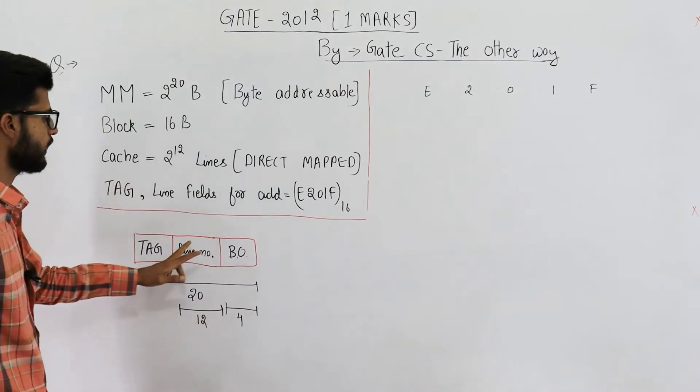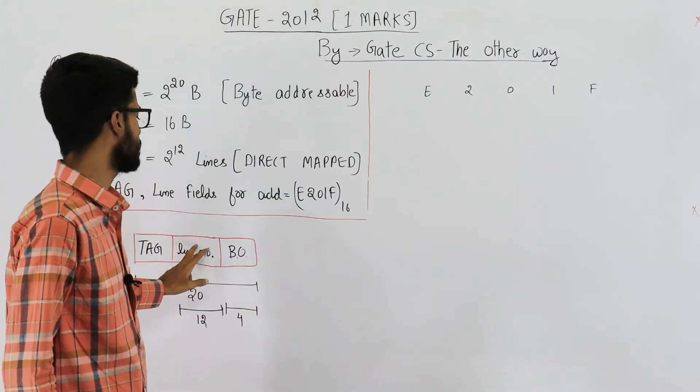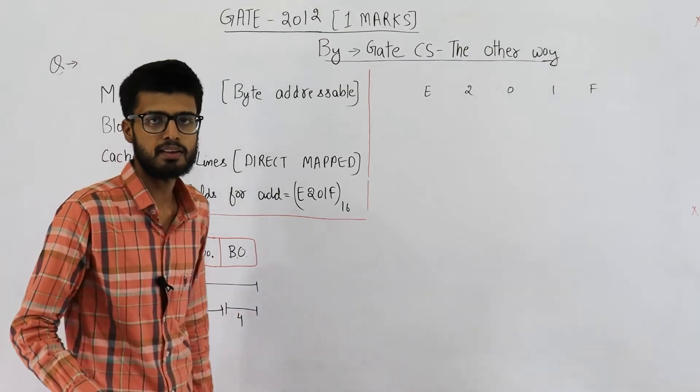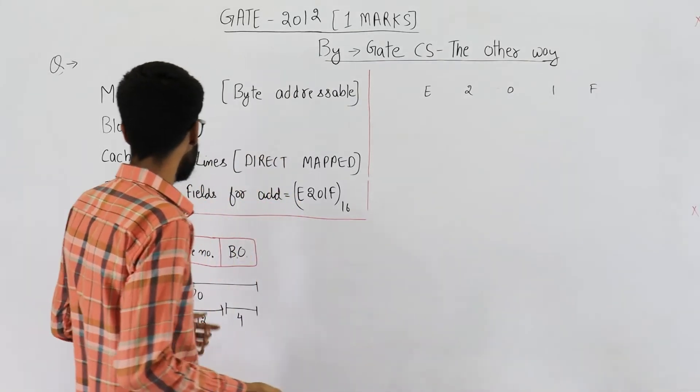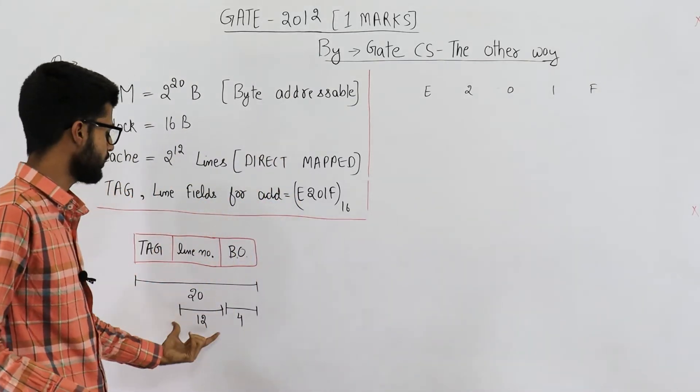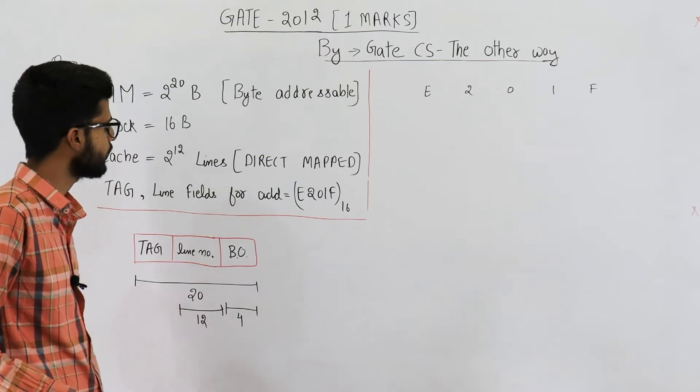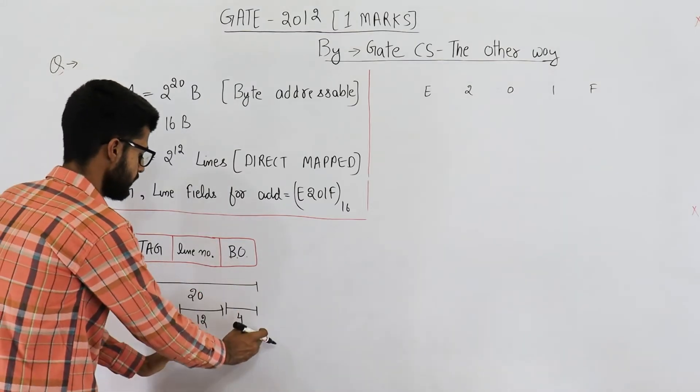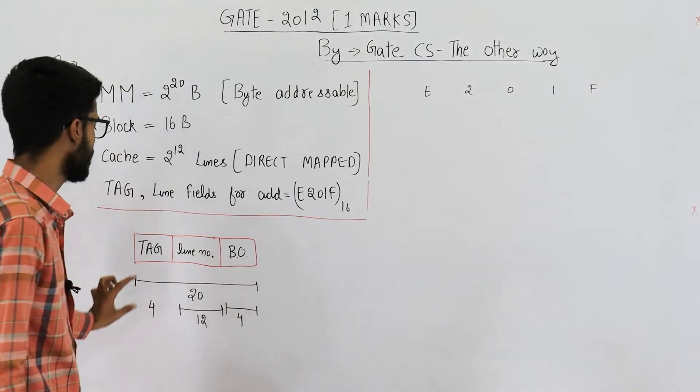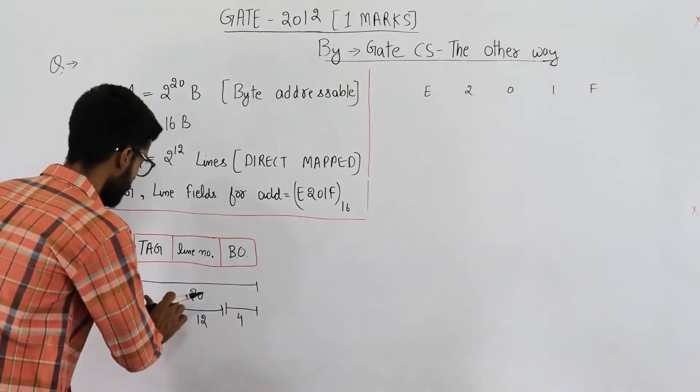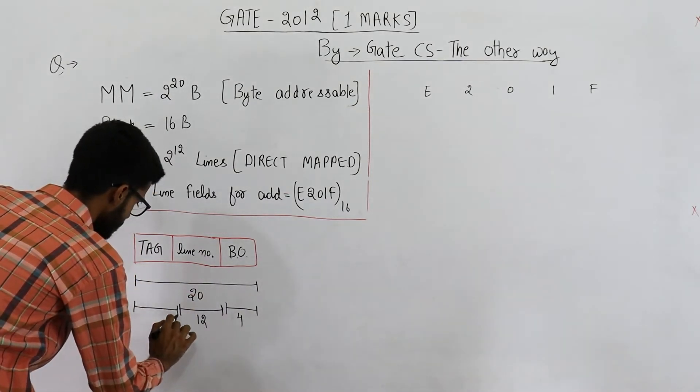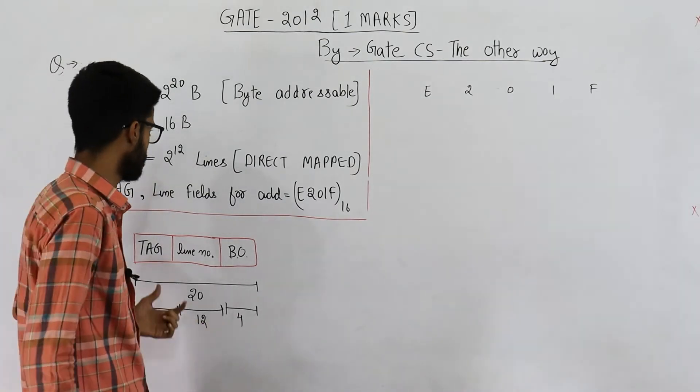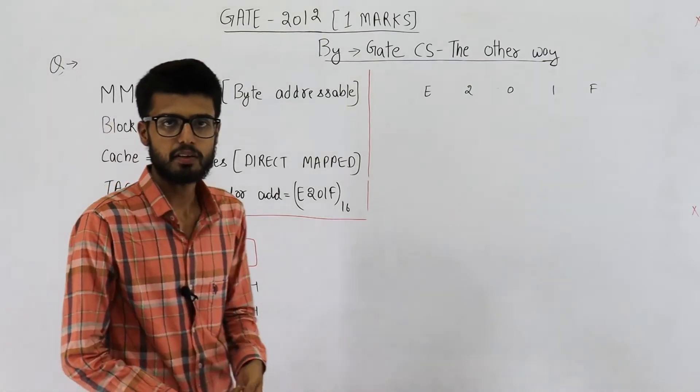So line number field identifies one line out of the total lines present in cache, that's why it will be having 12 bits. Now you see 12 plus 4 is 16, 20 minus 16 is 4, hence tag is 4 bits. That means our physical address is split as 4, 12, 4 and these are tag, line number and block offset fields.